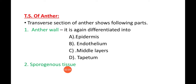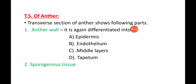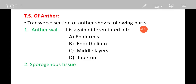Next, the transverse section of the anther. If we take a section, the parts seen in the anther are: number one, the anther wall, and number two, the sporogenous tissue.